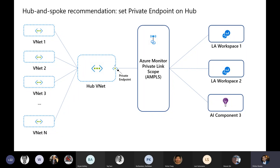Does that create a single point of failure for the private endpoint and the hub VNet? Azure has a lot of redundancy within data centers — multiple availability zones. You can build in resiliency so your VMs are across multiple availability zones. If there is a failure in that VNet, it can recover. This goes back to virtual machine resiliency, making sure the VMs connecting from this VNet are across availability zones and that everything else is also zone redundant.